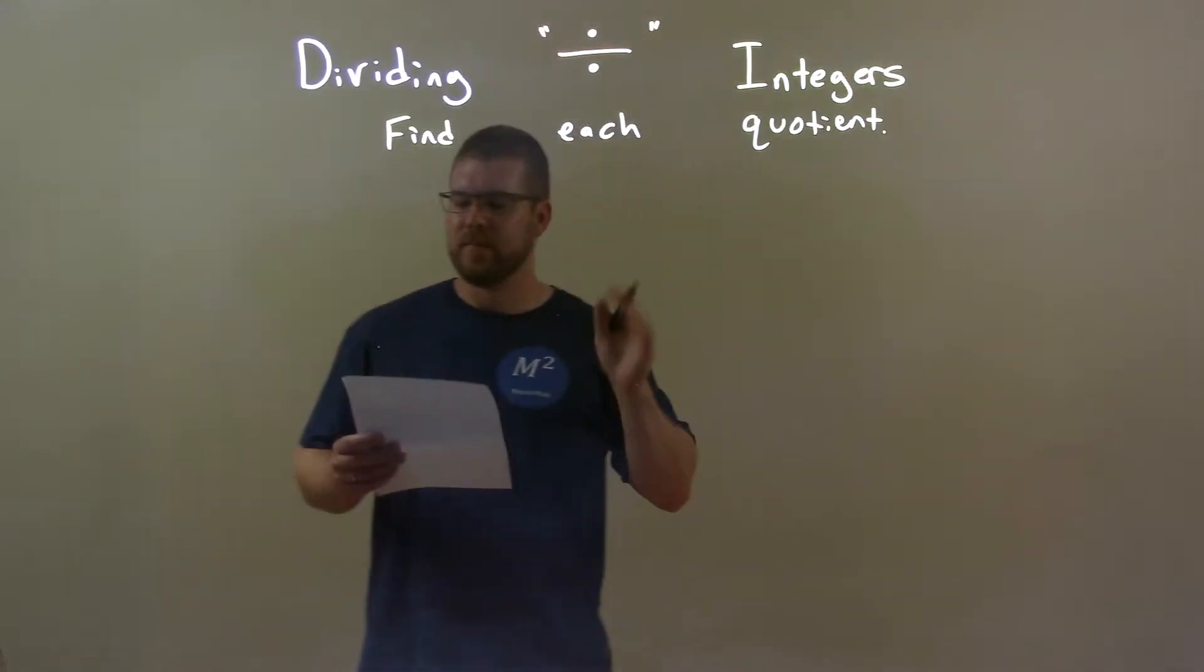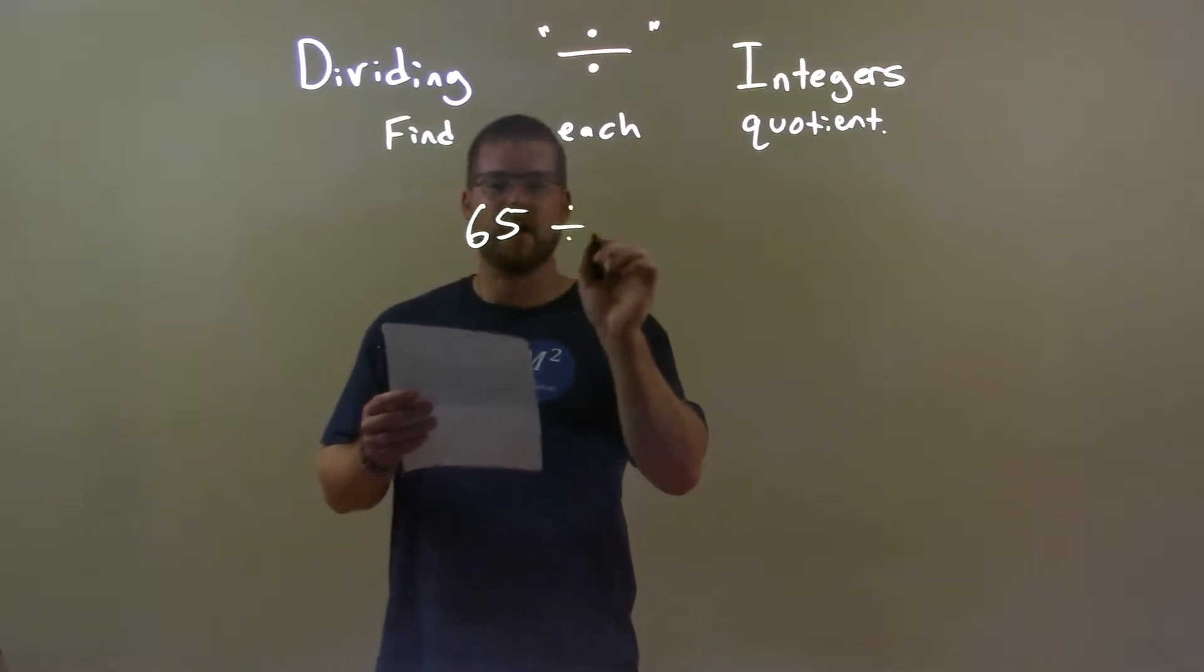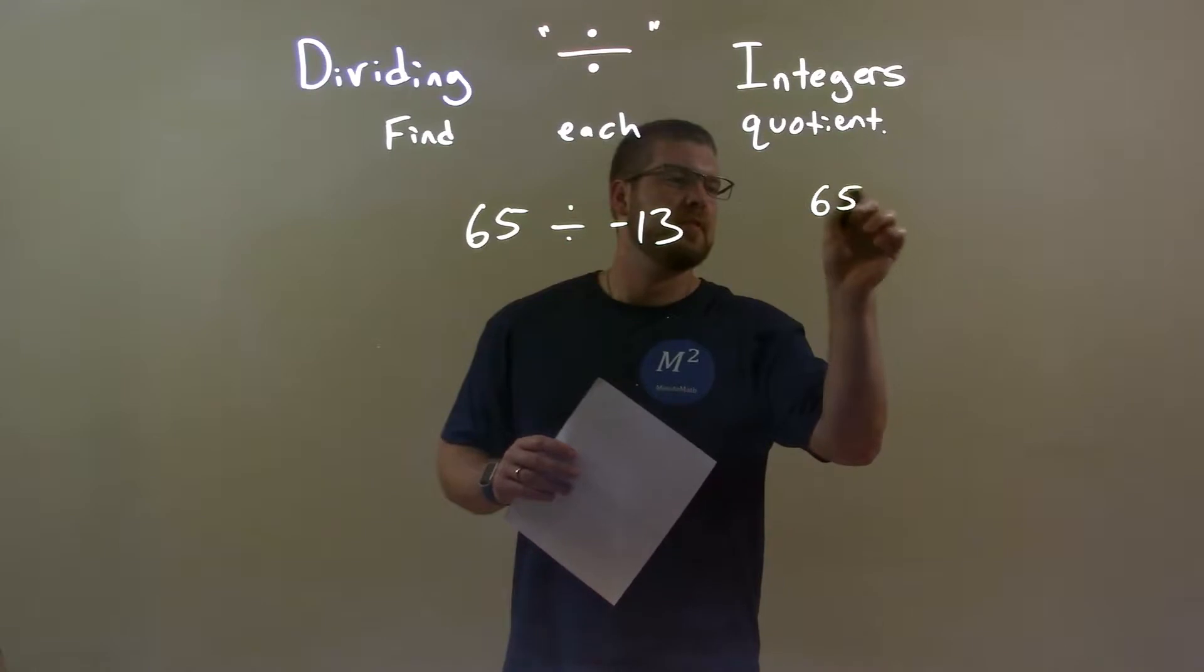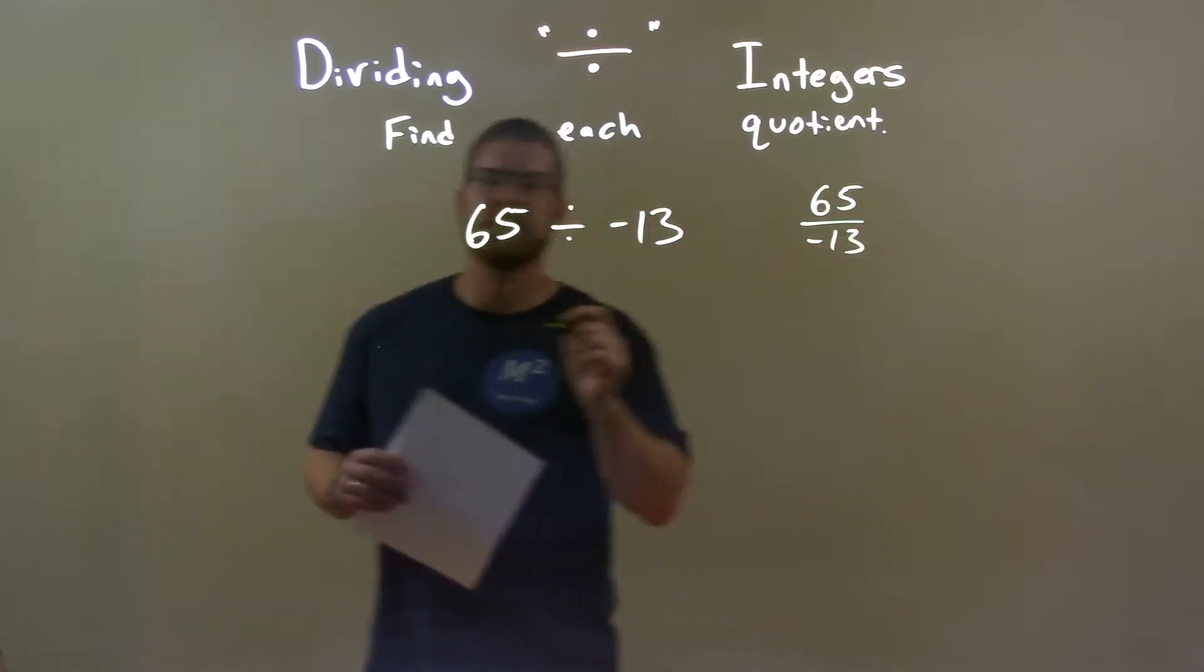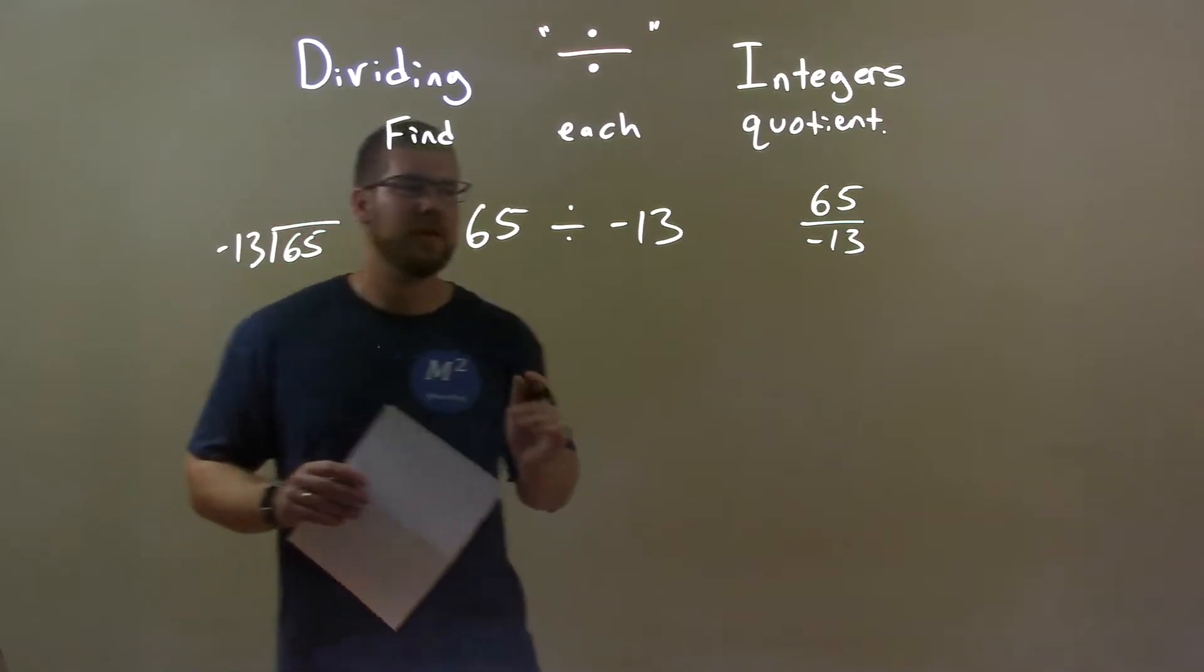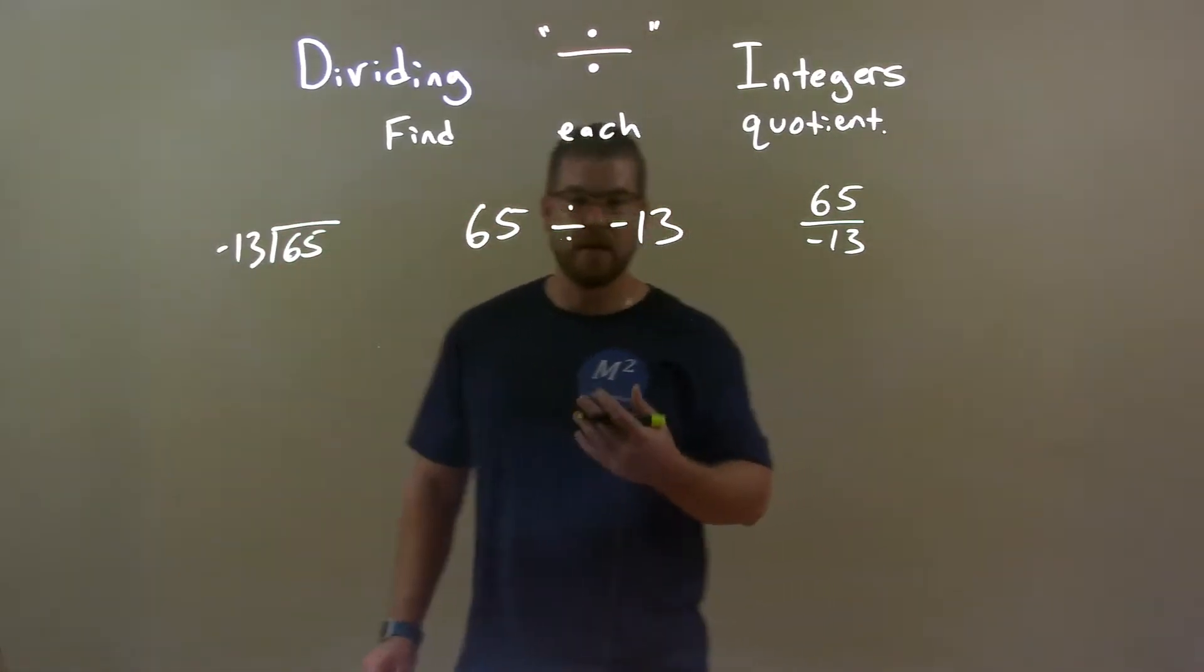So if I was given these integers 65 divided by negative 13, that's the same as a fraction 65 over negative 13, and negative 13 goes into 65. Now this one's a little tricky. If you don't know it off the top of your head it can be fairly difficult.